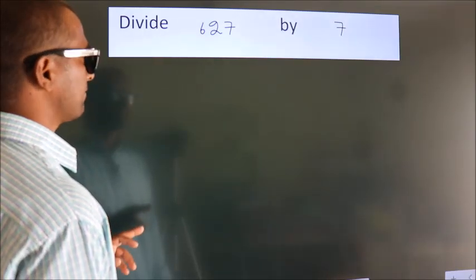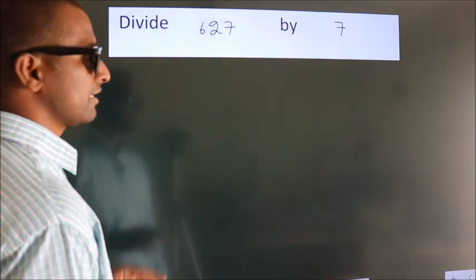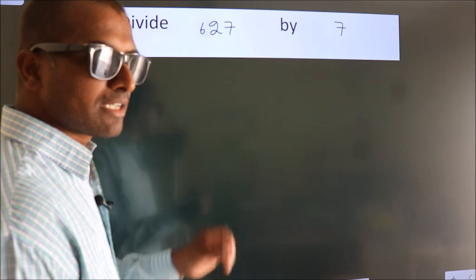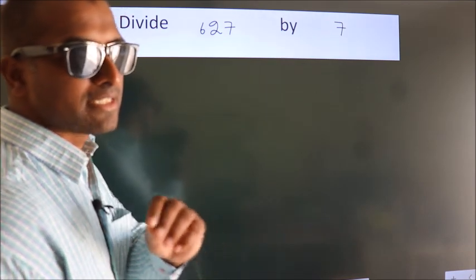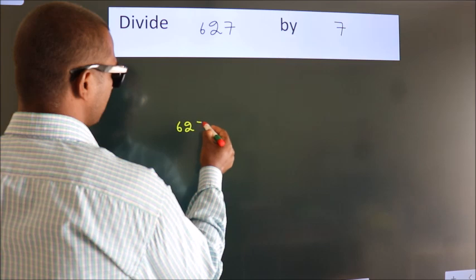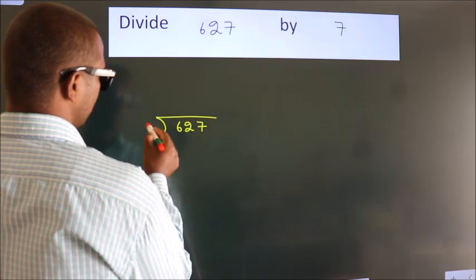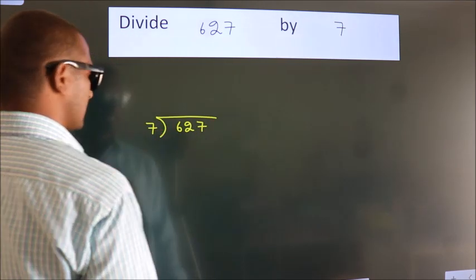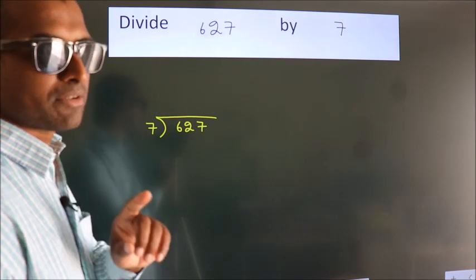Divide 627 by 7. To do this division, we should frame it in this way: 627 here, 7 here. This is your step 1.